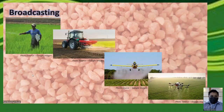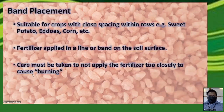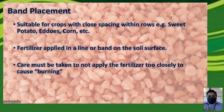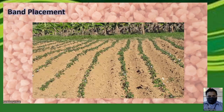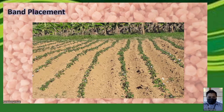Band placement is suitable for crops with close spacing within rows, such as sweet potato, arrowroot, and corn. The fertilizer is applied in a line or band on the soil surface. Take care not to place the fertilizer too closely to the actual plants, as this could cause phytotoxic burning. For example, with a crop of sweet potato in the field, you can clearly see that broadcasting would waste a lot of fertilizer rather than placing it directly in the root zone.